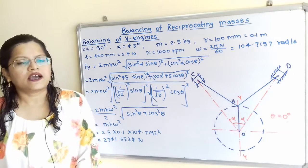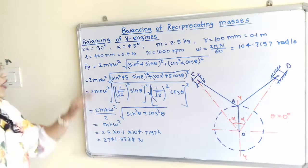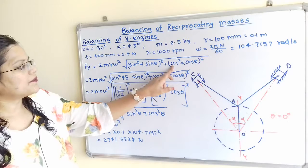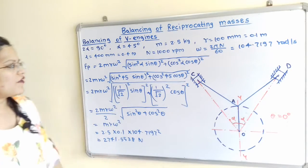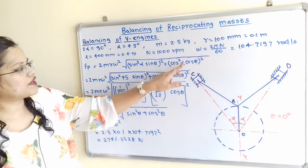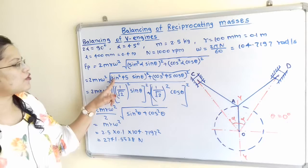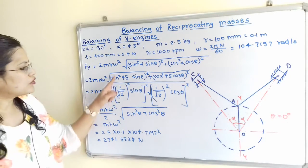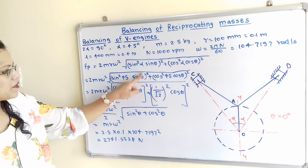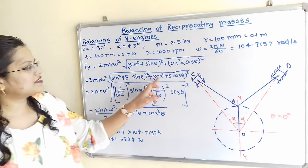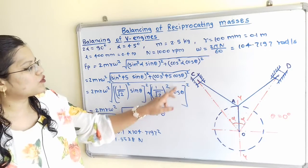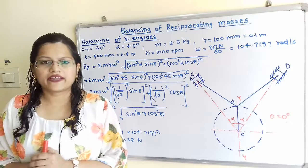We will first calculate the primary unbalanced force using: FP = 2mRω² × √[(sin²45° · sinθ)² + (cos²45° · cosθ)²]. Substituting sin 45° = cos 45° = 1/√2, we get sin²45° = cos²45° = 1/2. The square root term becomes √[(1/2 · sinθ)² + (1/2 · cosθ)²].